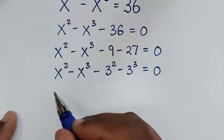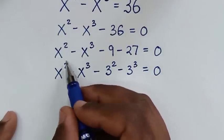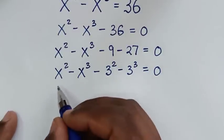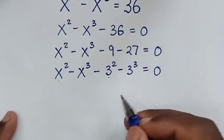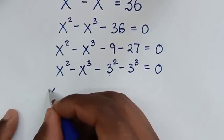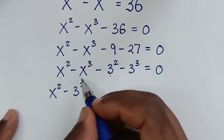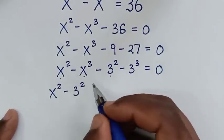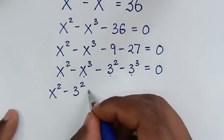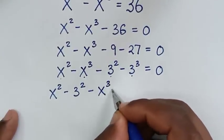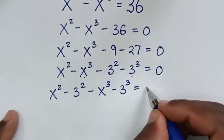In the next step we will put the like terms of the same power together. So we start with x squared minus 3 squared, then minus x cubed minus 3 cubed, is equal to 0.